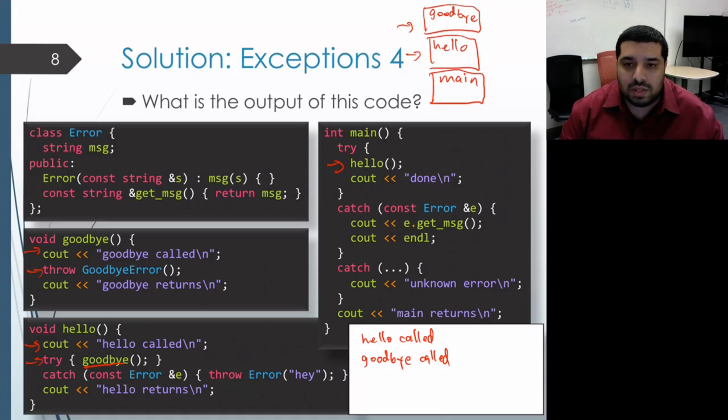So the program proceeds to the next scope to see whether there is a try catch that can handle a goodbye error. So it proceeds to main and checks to see are we within a try block in main, and we are.